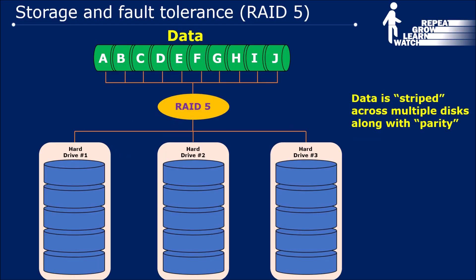Now let's talk about RAID 5. In this configuration, the data is striped across multiple drives along with parity information. We'll discuss how parity is used to recreate data in case of a hardware failure — whether a hard drive gets corrupted, goes down, or stops working.